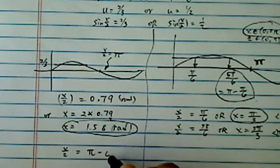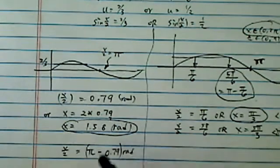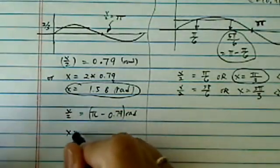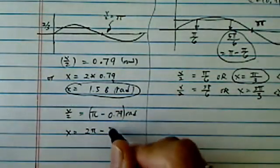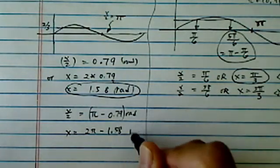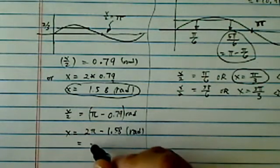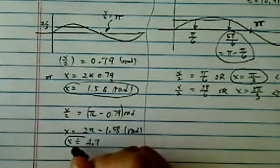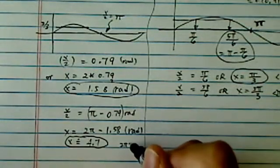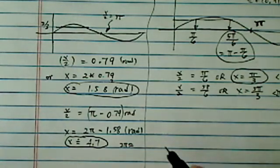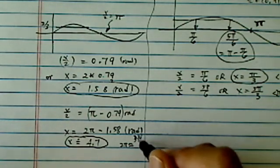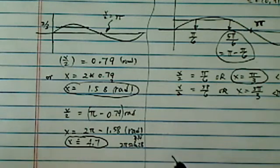x over 2 is equal to π minus 0.79 in radians. So x is equal to 2π minus 1.58 in radians. Let's get a decimal point for this one. So 3.14 times 2, and then we're going to subtract 1.58. So basically it's 4.7 in radians. Now 2π is roughly 6.14, so it's less than 6.28 in radians.